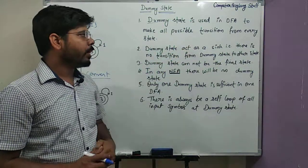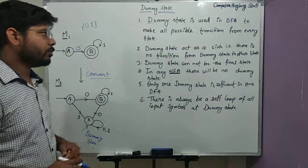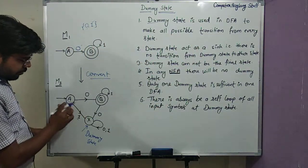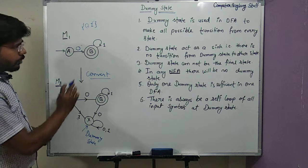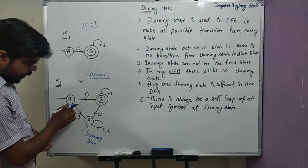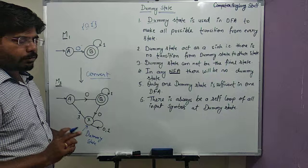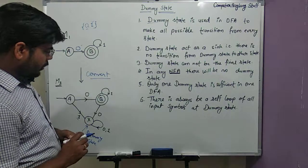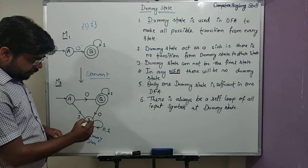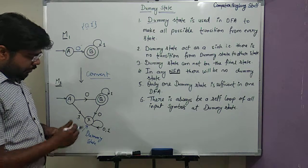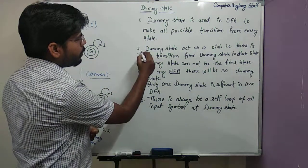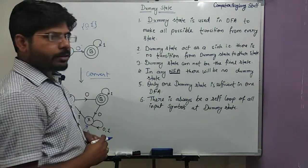That is why we need a dummy state — it is used in a DFA to make all possible transitions from every state. All possible transitions means transitions for all the input symbols. In a DFA, from every state we should have a transition for all input symbols, so that is why we need to create a dummy state.